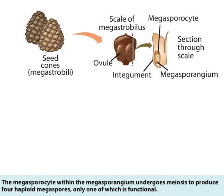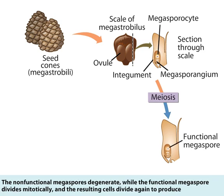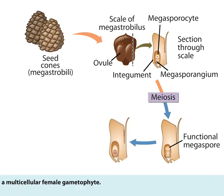The megasporocyte within the megasporangium undergoes meiosis to produce four haploid megaspores, only one of which is functional. The non-functional megaspores degenerate, while the functional megaspore divides mitotically, and the resulting cells divide again to produce a multicellular female gametophyte.